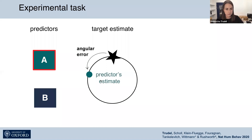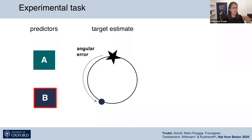This distance between the true location and the predictor's estimate we refer to as angular error. It could also be that if you choose the blue predictor, you would observe a predictor with a much bigger angular error, again defined by the distance between target location and predictor's estimate.